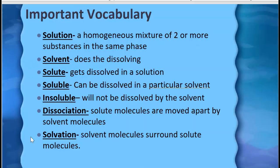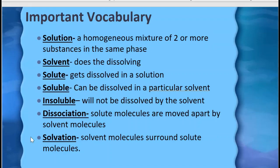When something dissolves, it does so using two processes — basically two steps. First, the solvent molecules are going to have to collide with and move apart the solute-solute molecules. Dissolving things is a tiny little horror show in a beaker because these solute molecules are being torn apart by the solvent. But once those solute molecules are moved apart, the solvent molecules wrap around the solute and surround it in a process called solvation, which keeps those solute molecules from just sticking right back together again.